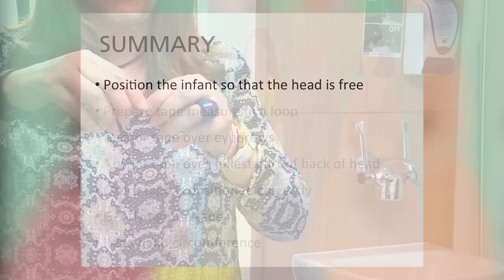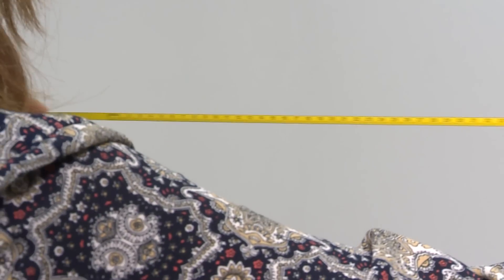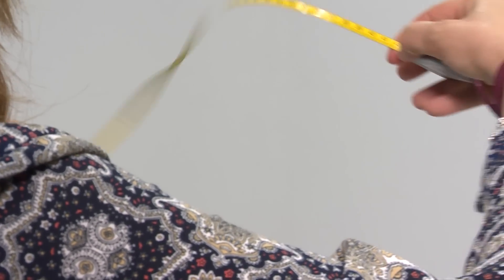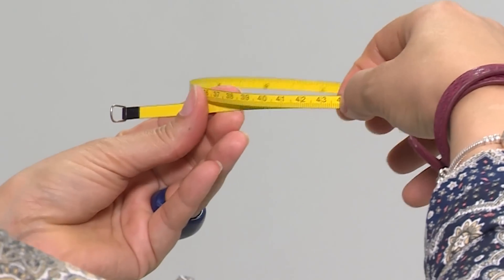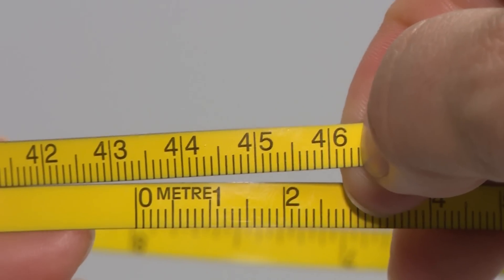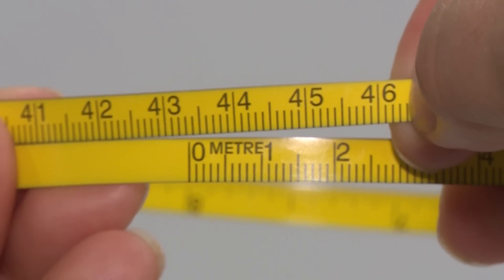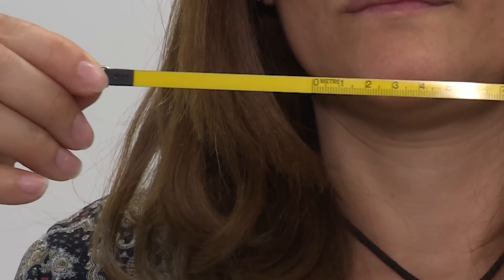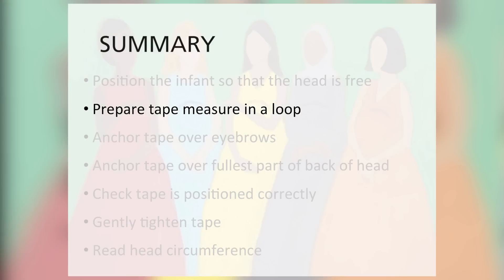The measurer uses a tape measure with the measurement unit in centimetres and millimetres. Before putting the tape measure around the baby's head, the measurer should loop the tape. The end with the zero should be placed under the other end to create a continuous line across the tape and ensure precision of measurement. You may need to adjust this technique if the tape endings are different from the tape we are using here. The loop should be a little bigger than the size you expect the baby's head to be.